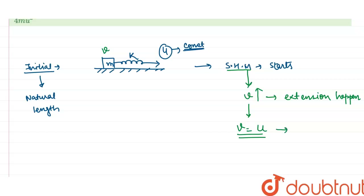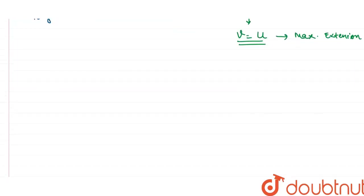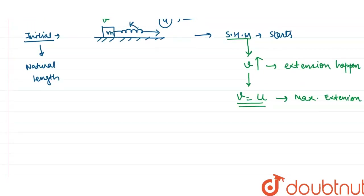When v equals u, there is maximum extension. After that, if we continue pulling, the velocity of the block keeps increasing. There comes a time when the velocity of the block is 2u — double the spring velocity — and at this point compression starts. This is the second key position.